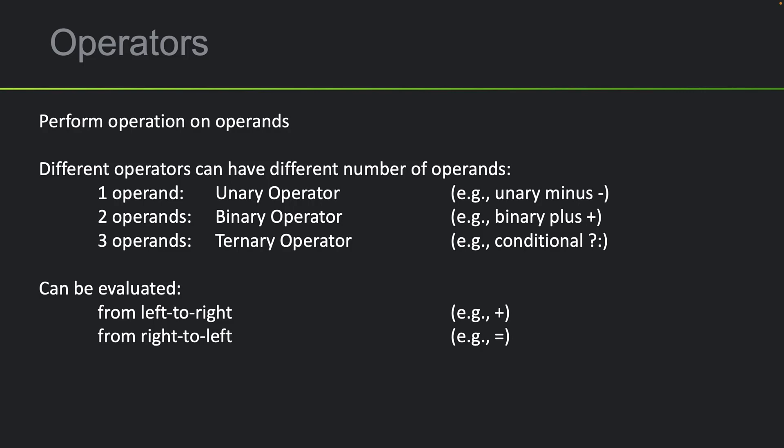Operators can be evaluated from left to right or from right to left. Addition is evaluated left to right — we take the value to the left and right of the operator and add them. Assignment is evaluated right to left — we take the value on the right and assign it to the variable on the left.